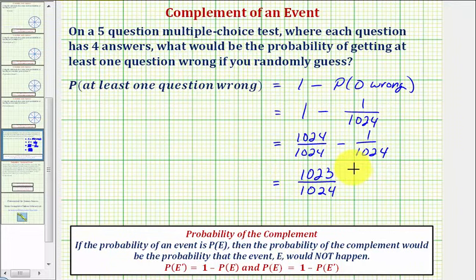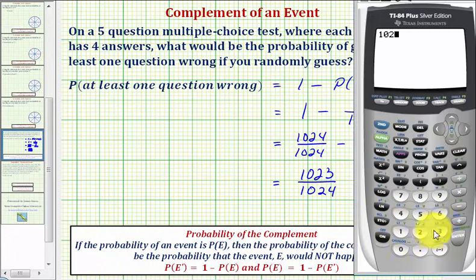Let's also express the probability as a decimal and percentage. To convert to a decimal, we divide 1,023 divided by 1,024. If you round to four decimal places, it would be approximately 0.9990.